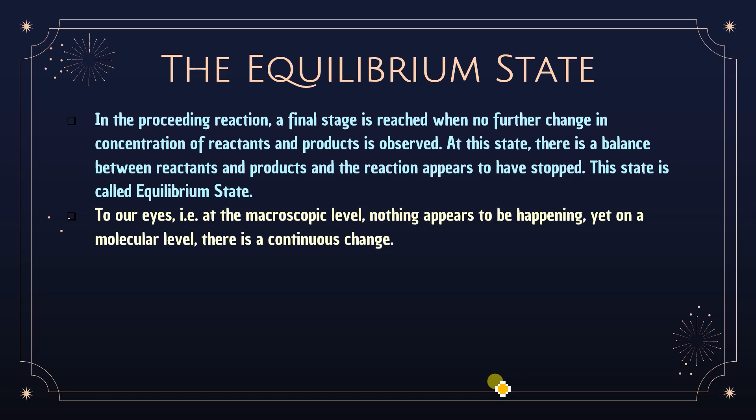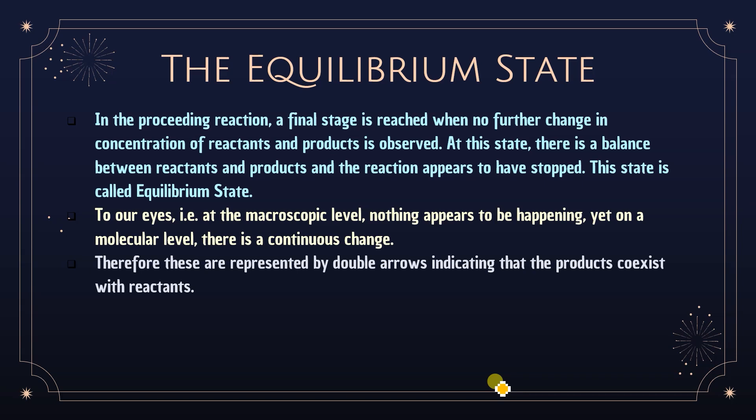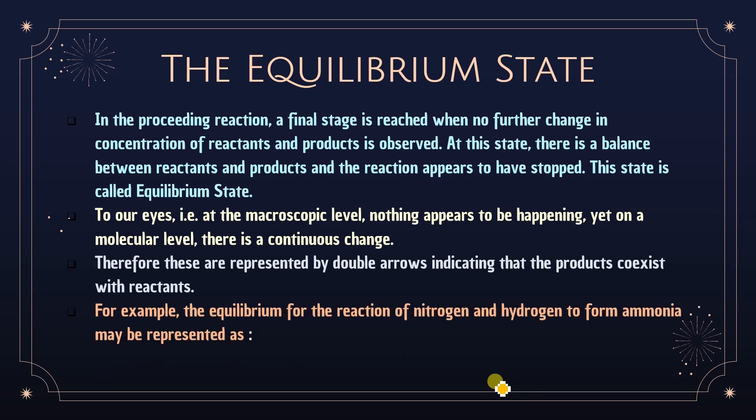Reactions at equilibrium are represented by double arrows, indicating that products co-exist with reactants. At a certain point, both reactants and products exist simultaneously. This is not just at the initial or final stage — at any moment of the reaction, the concentration of products co-exists with the concentration of reactants. For example, the equilibrium for nitrogen and hydrogen forming ammonia is represented as: N₂ + 3H₂ ⇌ 2NH₃.